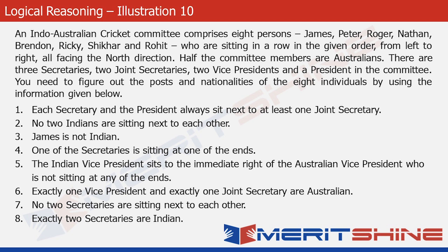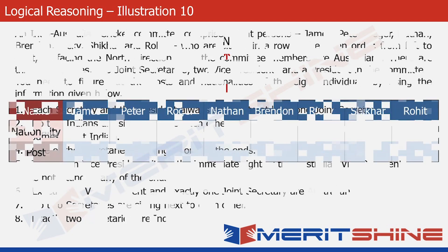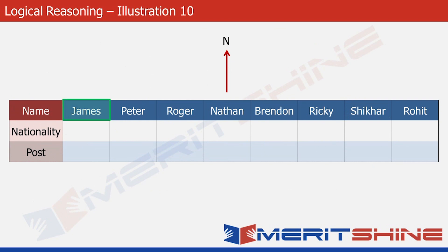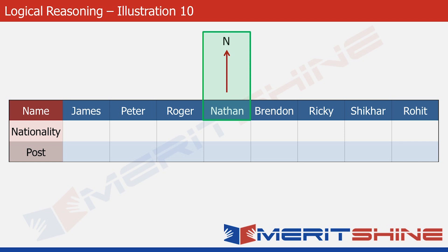Let's proceed with the solution. We are told that these 8 individuals, starting from James, are sitting from left to right, all facing North. James is at the extreme left and Rohit is at the extreme right. North should always be taken as the upward direction in these questions. If you visualize yourself in place of Nathan facing North, Roger would be on your left and Brendan on your right. Remember that all these directions are very important, and if the direction reverses, the arrangement changes accordingly.